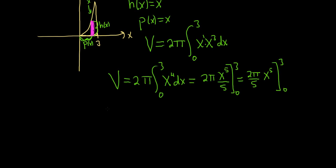So first we plug in the 3. So we have 2 pi over 5. Plug in the 3, you get 3 to the 5th. Subtract. Plug in the 0, you get 0 to the 5th.